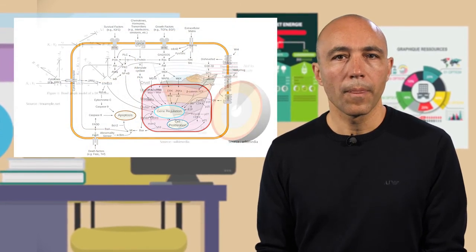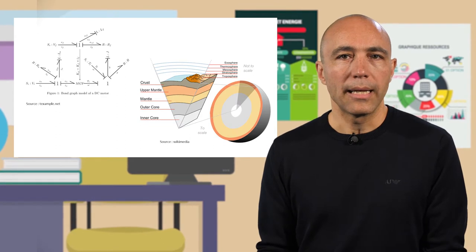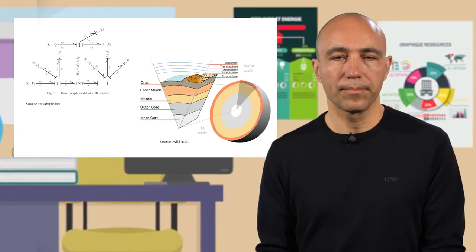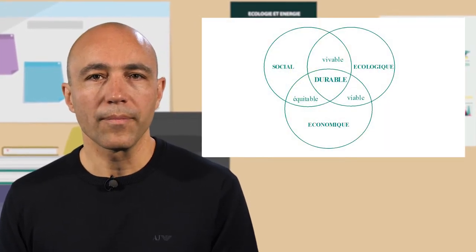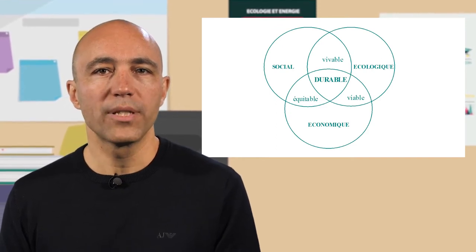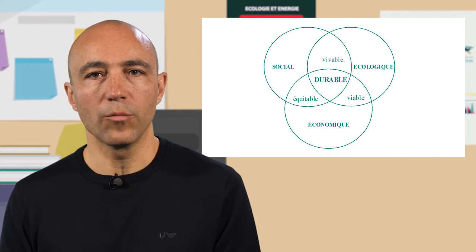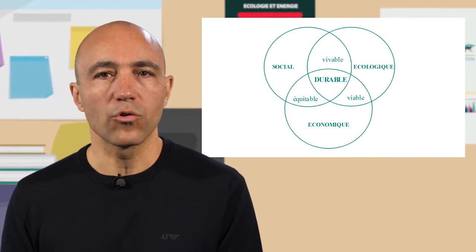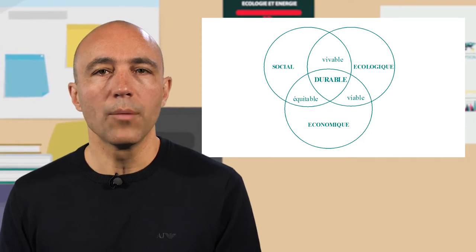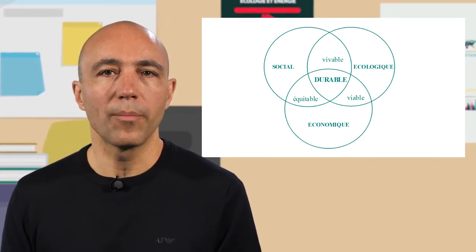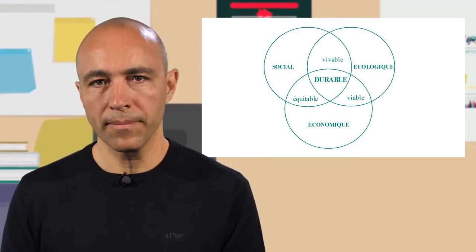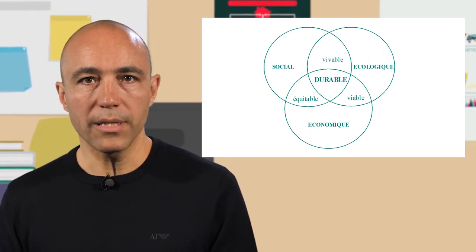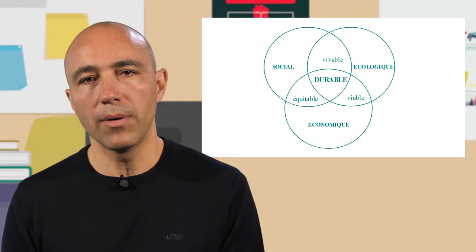Il existe différentes catégories de modèles : schématiques, numériques ou expérimentaux, la diversité des modèles scientifiques est immense. La représentation du développement durable elle-même peut être considérée comme un modèle — un modèle programmatique, puisqu'il définit davantage un idéal qu'une réalité observable — mais un modèle qui s'appuie sur trois dimensions fondamentales : la société, la nature et l'écologie. À l'intersection de ces trois sphères, des lois définissent les notions de développement équitable, vivable, viable et durable.